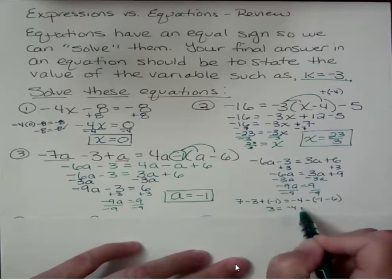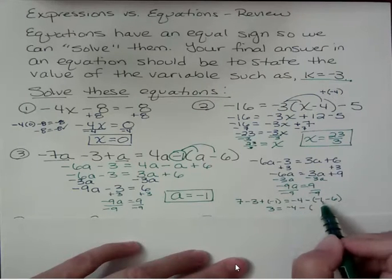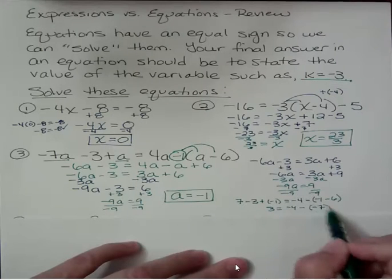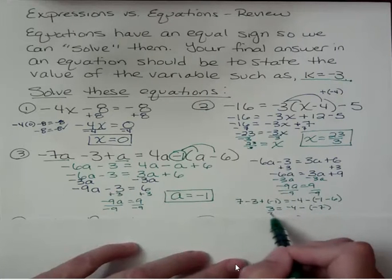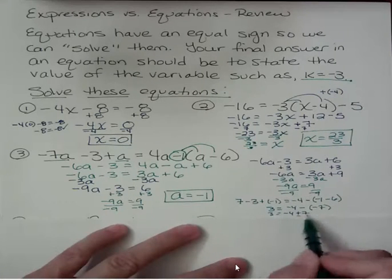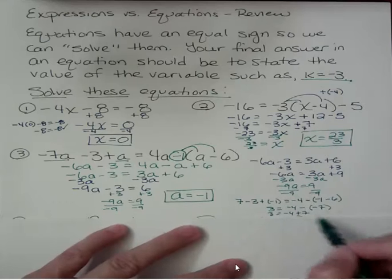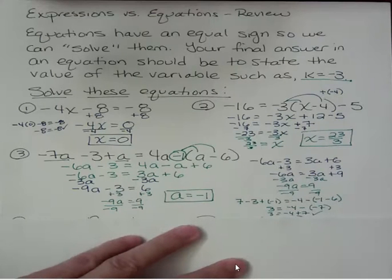Negative 4 plus 7 is 3. And there's my check. So I know that it's true. If I plug it in, I get the same thing on both sides.